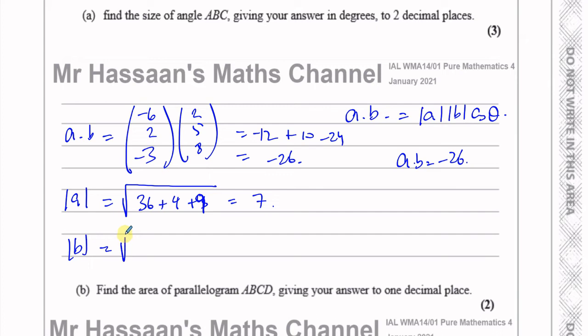Now I need the magnitude of the vector B, which is going to be the square root of 2 squared, which is 4, plus 5 squared, which is 25, plus 8 squared, which is 64. So that's going to be 64 plus 25, which is 89, plus 4, which is 93, the square root of 93.